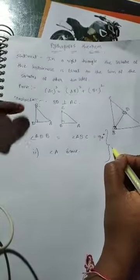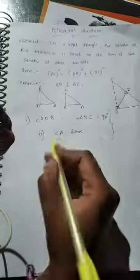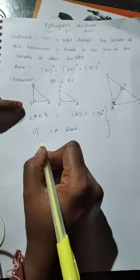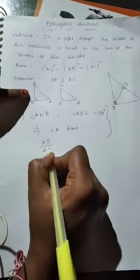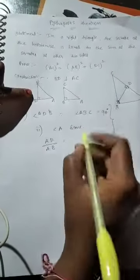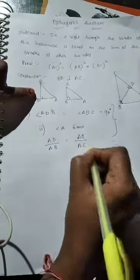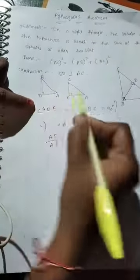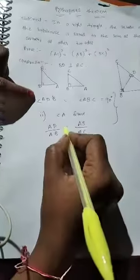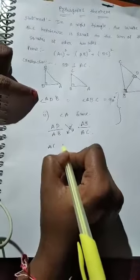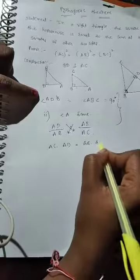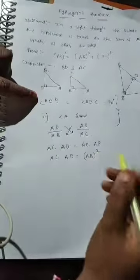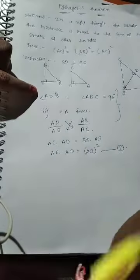By the similarity of triangles, we know that the ratio of base to hypotenuse is equal. So here: AD over AB equals AB over AC — where AD and AB are the base and hypotenuse in triangle ABD, and AB and AC are the base and hypotenuse in triangle ABC. By cross multiplication, AC × AD = AB². Mark this as Equation 1.